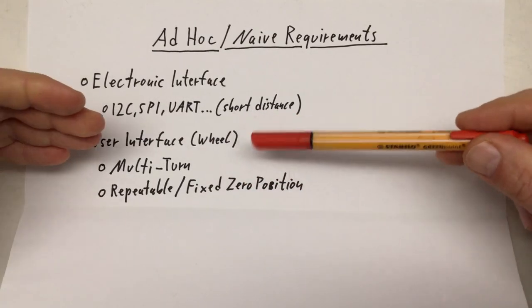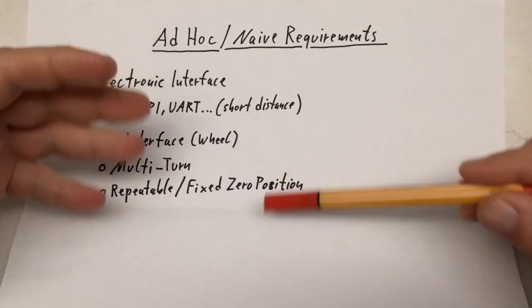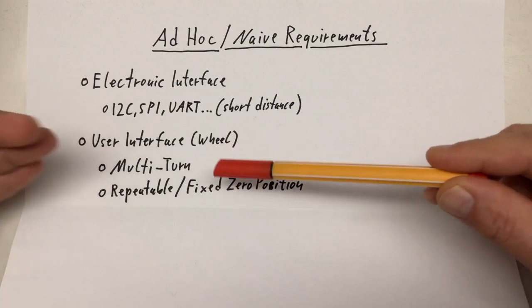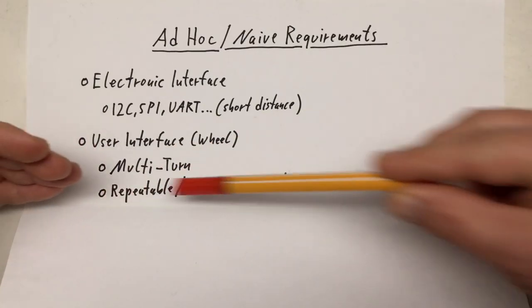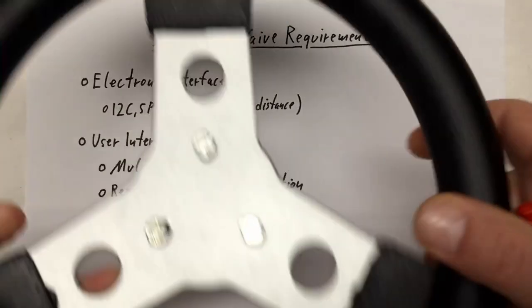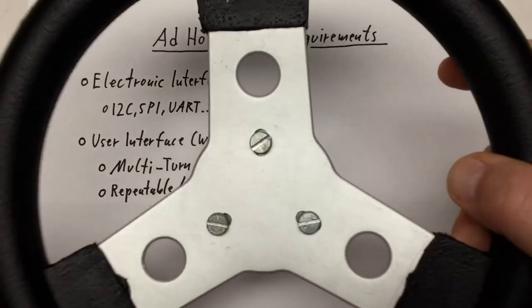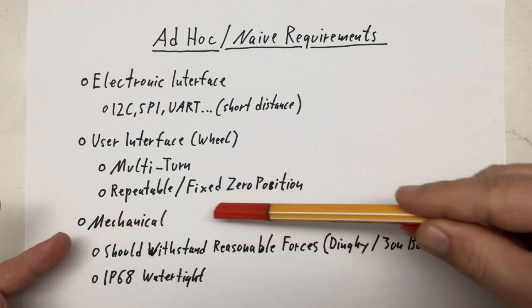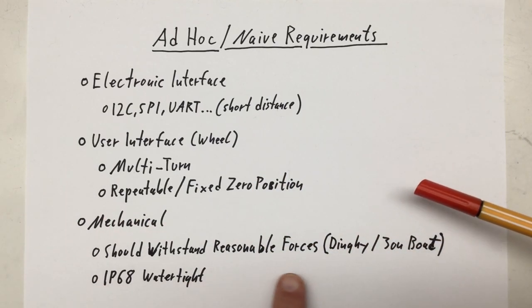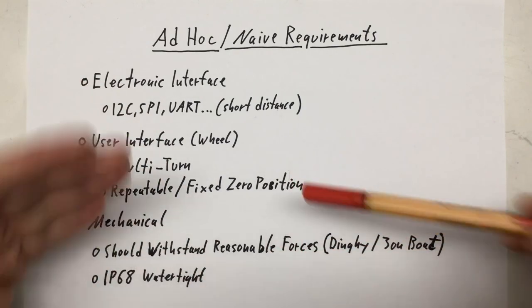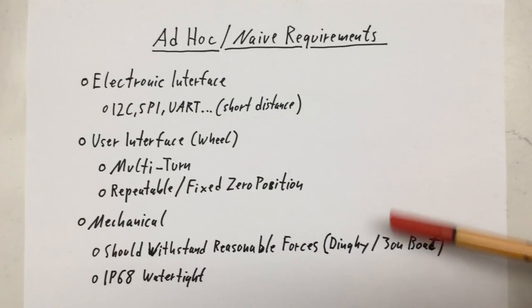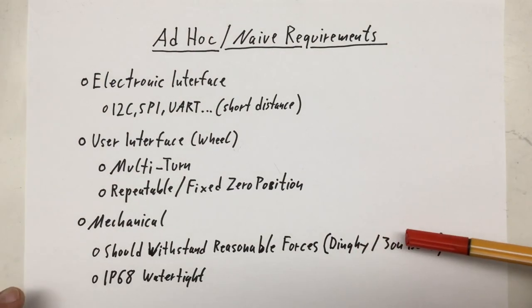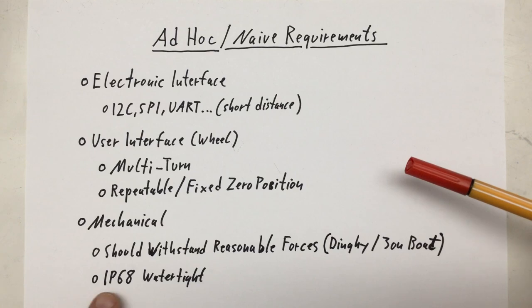And if you have ever piloted a small boat or a sailing boat, motorboat, doesn't matter, that featured some kind of steering wheel, that is also multi-turn. So these things are obviously multi-turn. And also, it should be repeatable and have a fixed zero position. That is, one position of the wheel should exactly correspond to one position in your steering. Finally, some mechanical requirements. It should withstand reasonable forces. And here we have to talk a little bit about the context. I intend to use that wheel in a small dinghy or a drone boat. So one or two persons, nothing fancy. And of course, also in the name, it should be IP68 watertight.